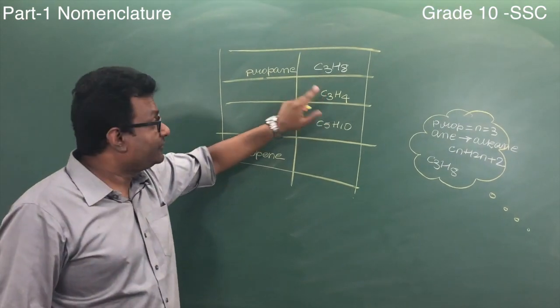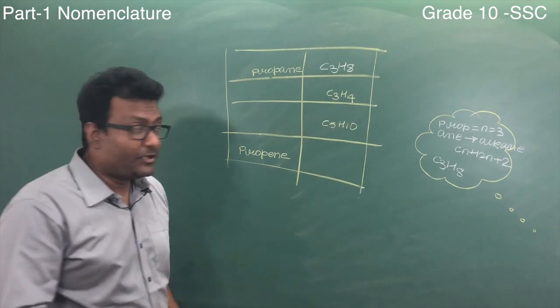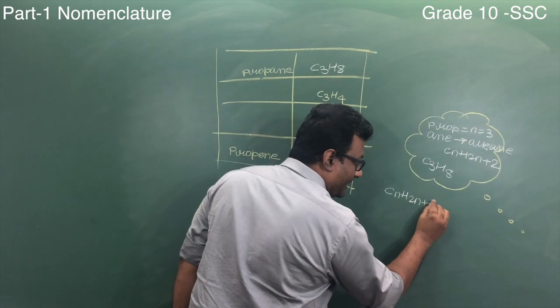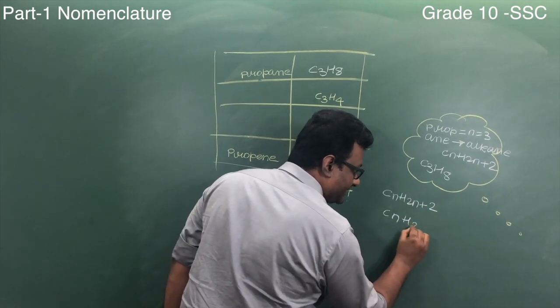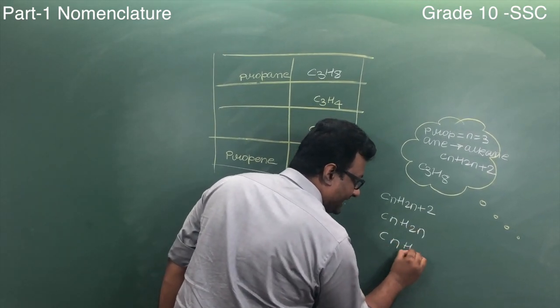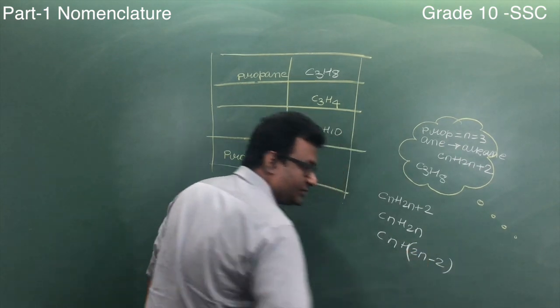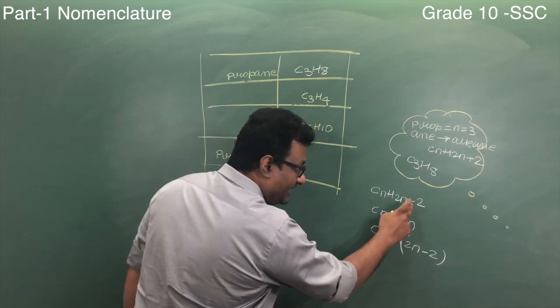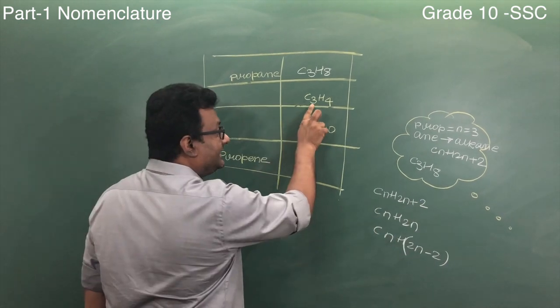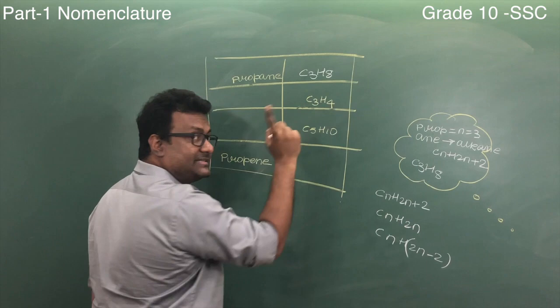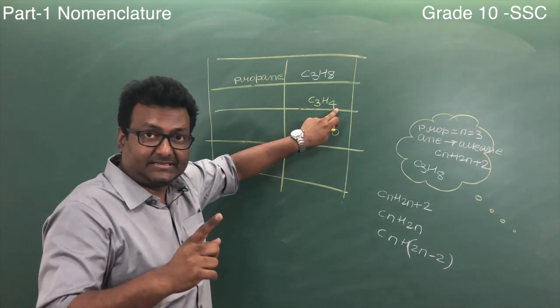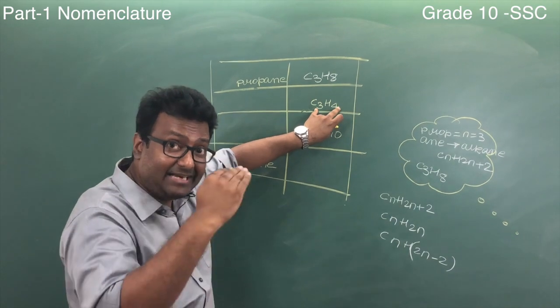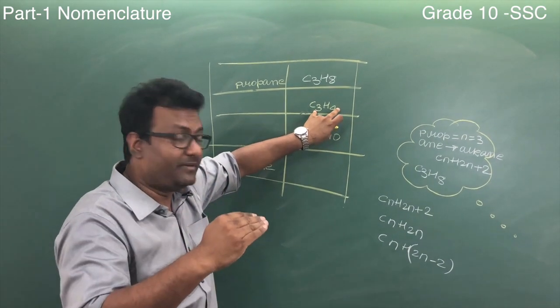Now if they're giving a molecular formula and telling you find the name, how will you find the name? Remember, there are only three general formulas: CnH2n+2, CnH2n, and CnH2n-2. So n is 3, double is 6. So is this more than double, less than double, or equal to double? If it is equal to double, it is alkene. If it is more than double, double plus 2, it is alkane. If it is less, 2 less than double, it is alkyne.